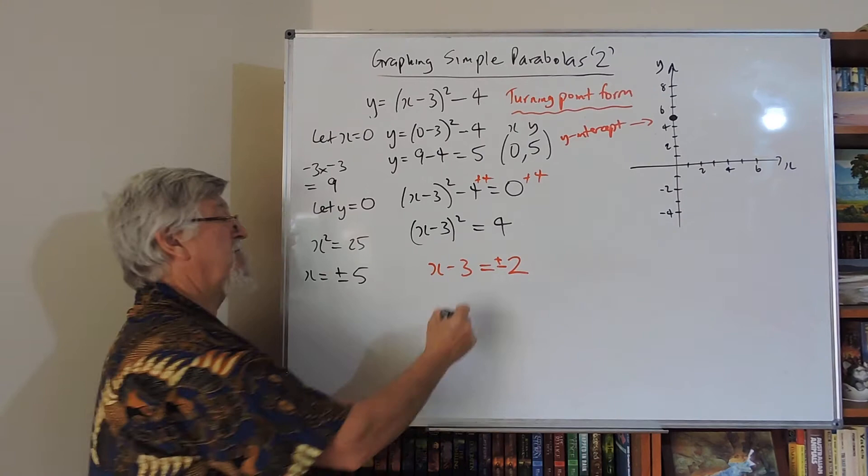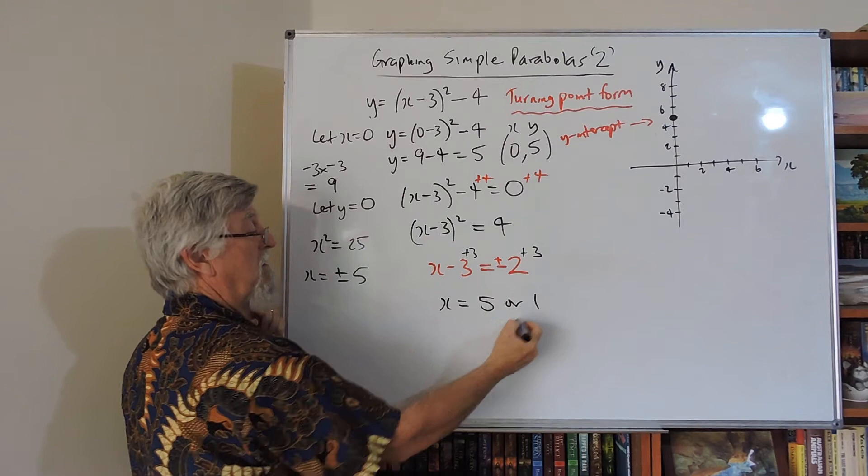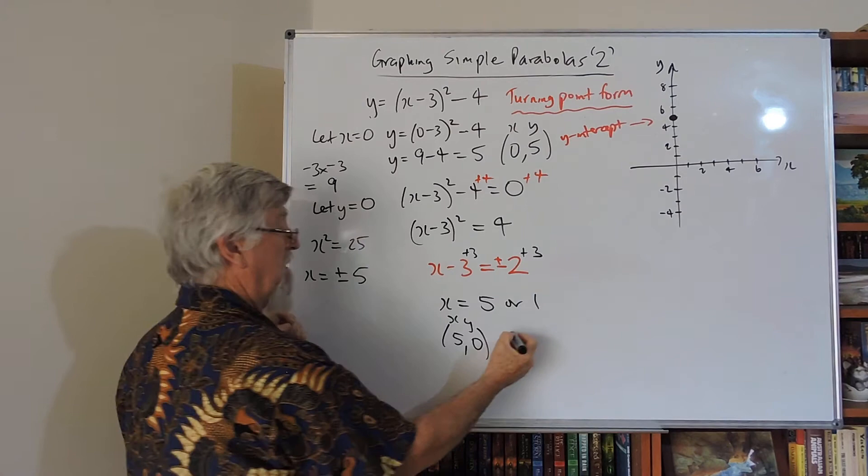So here we go. If I add 3 to this side, I add 3 to that side, I've got x equals 2 plus 3 is 5, and the other answer is minus 2 plus 3, which is 1. So I have an x of 5 and a y of 0, and I have an x of 1 and a y of 0.